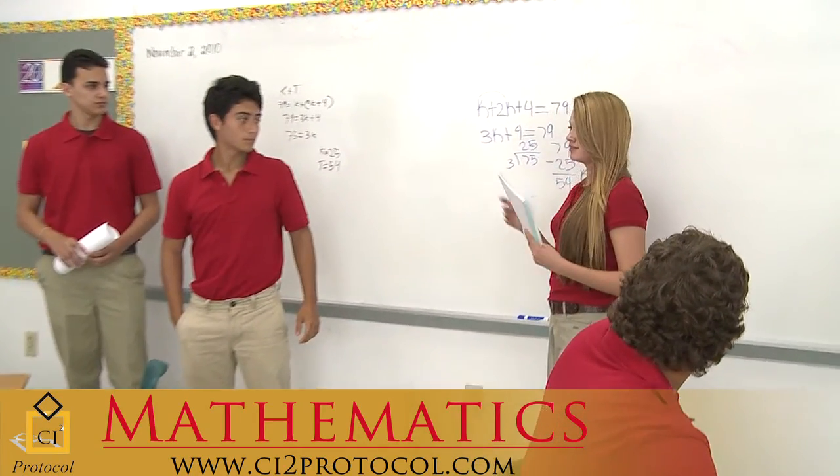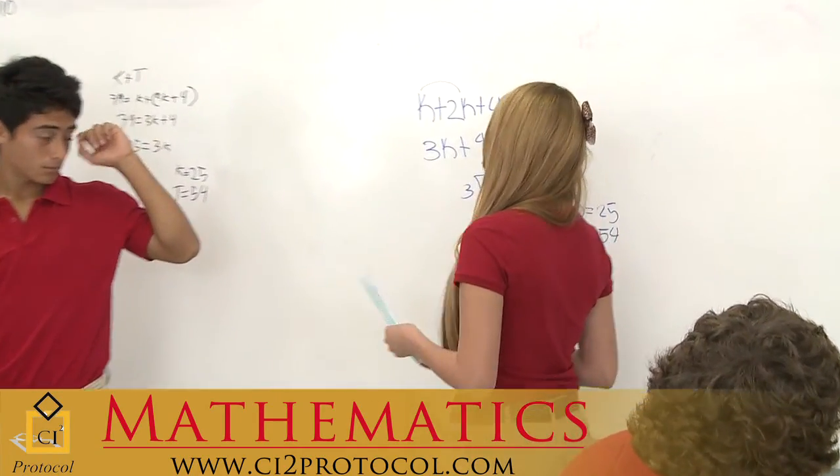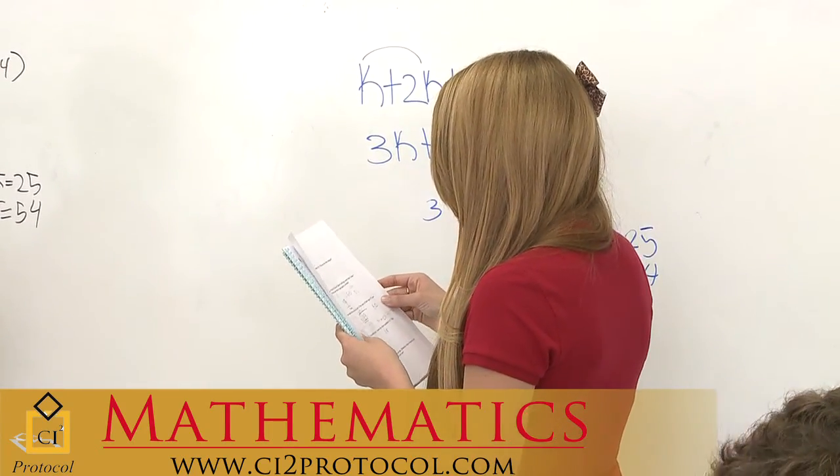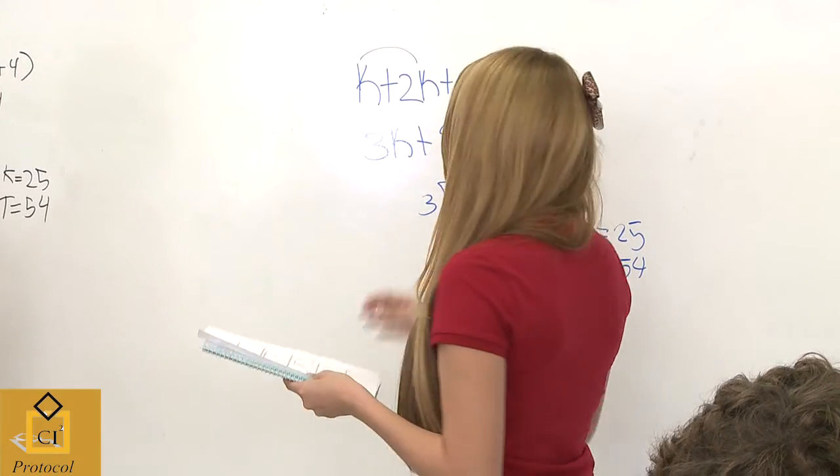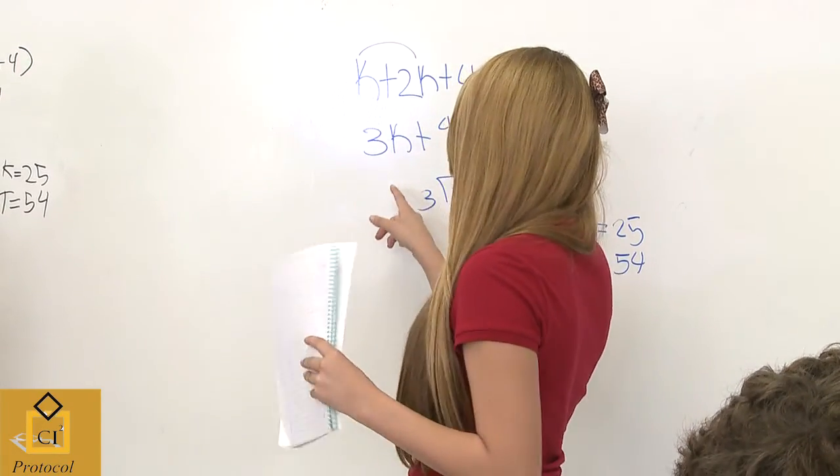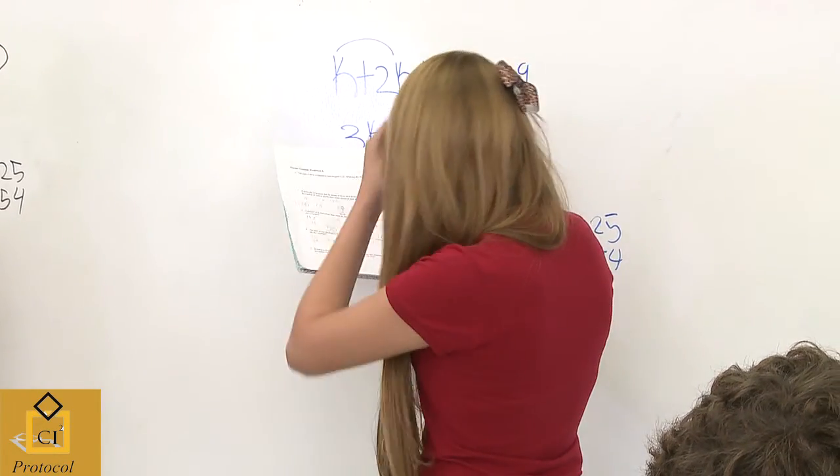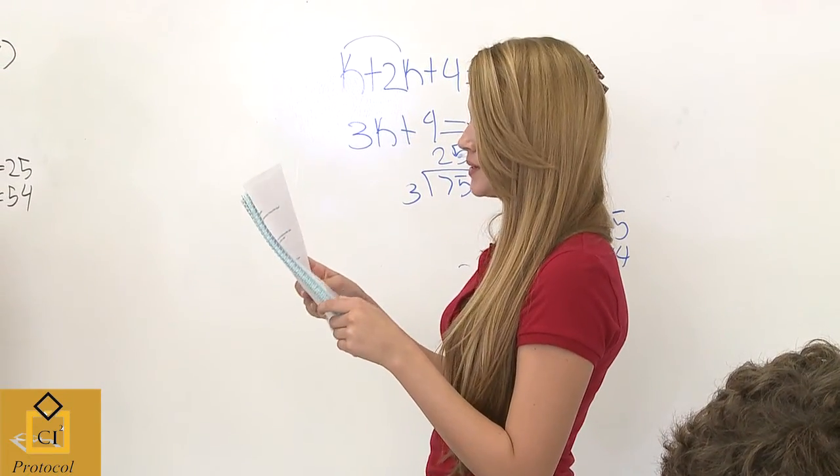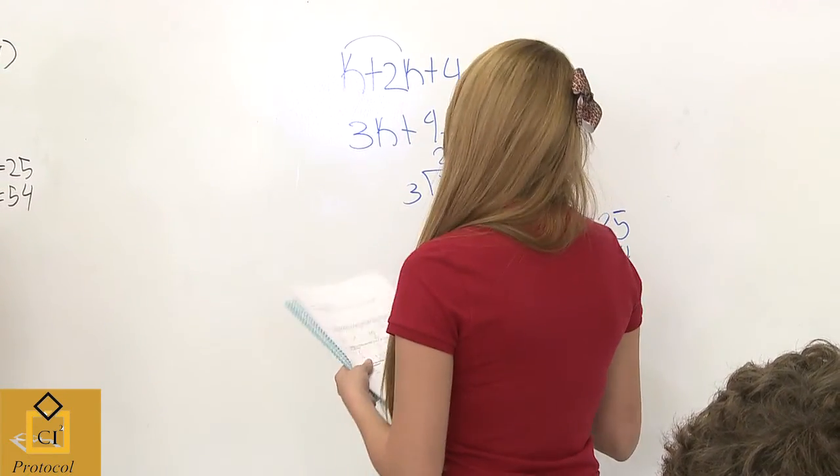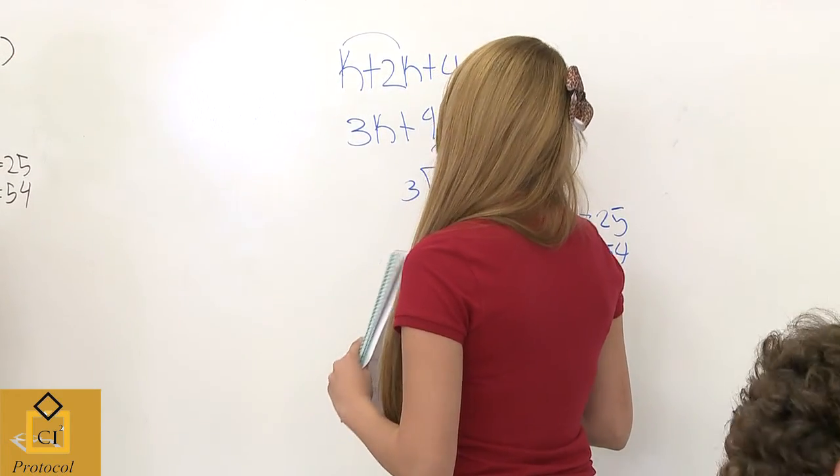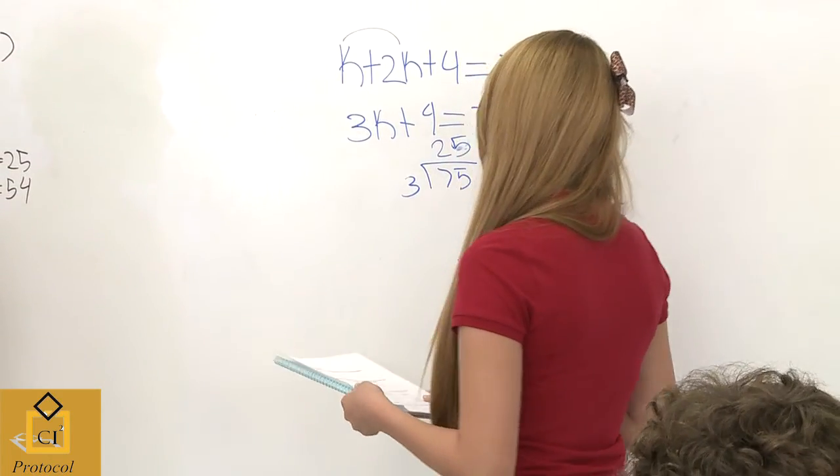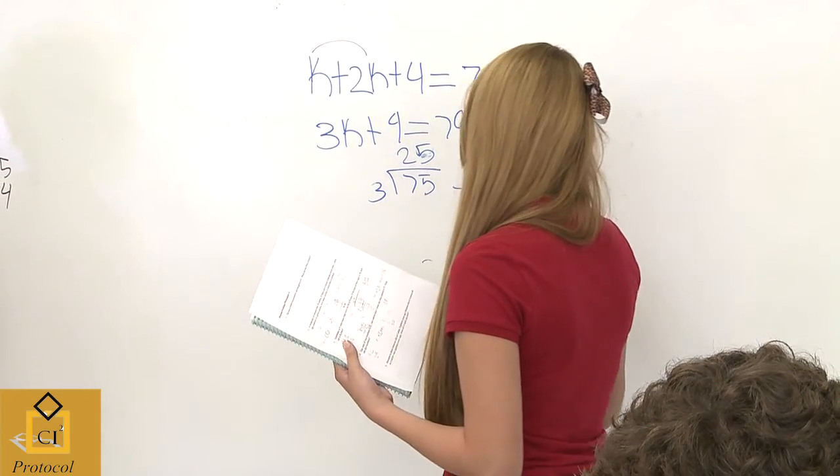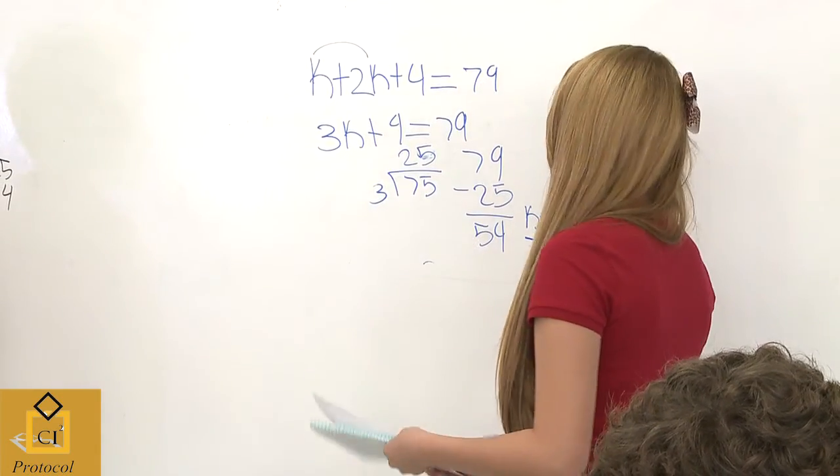The variable is k, so what I did was k plus 2k because it says that Kyoko is twice as old, so 2k plus k equals 3k, and then plus 4 because Toshihiko is 4 years more. So then I divided 3 into 75, which gave me 25, and then I subtracted 25 from 79, which gave me 54.